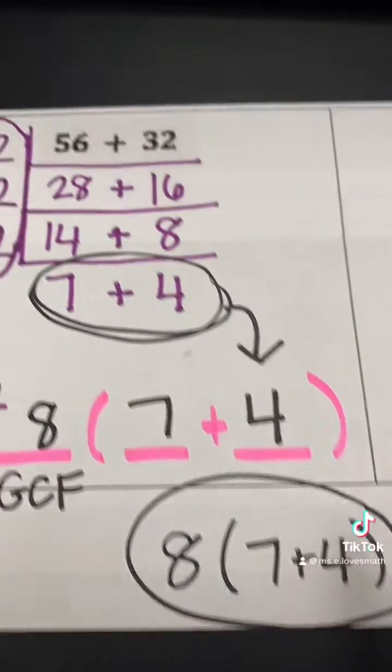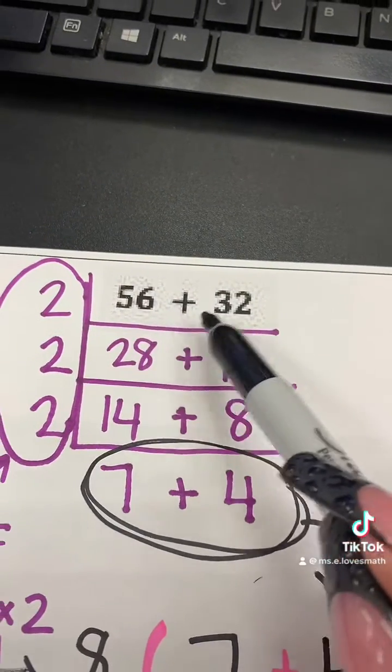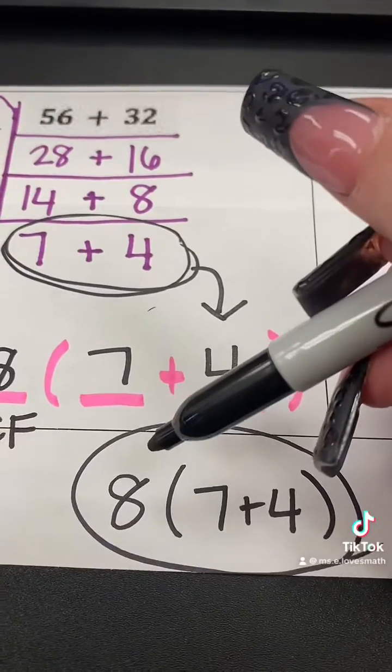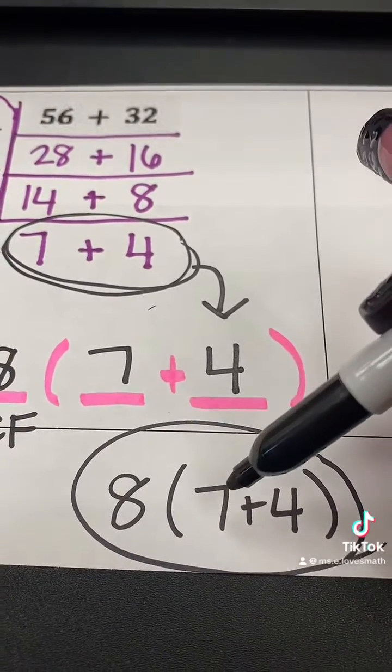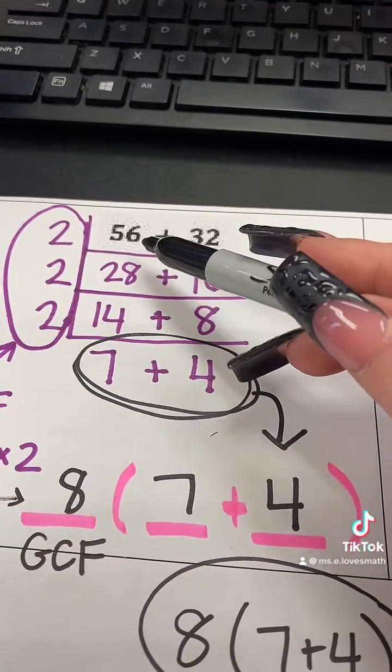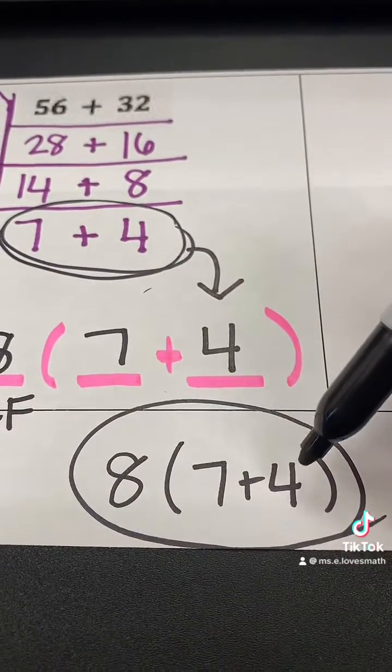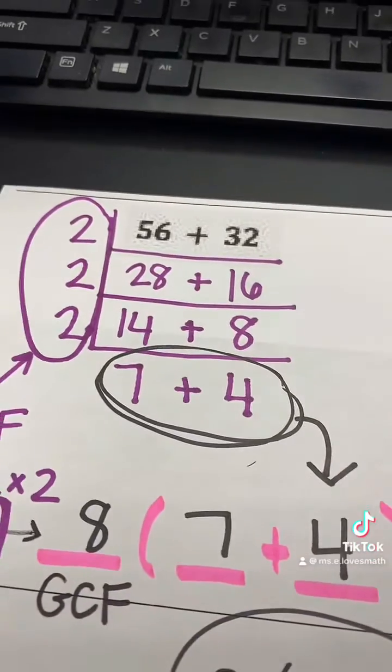This expression is equivalent to 56 plus 32. You can check it because if you were to distribute 8 times 7, you get 56. If you were to distribute 8 times 4, you get 32.